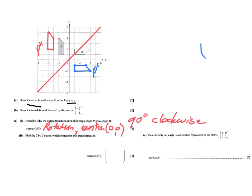It was quite easy to find out it is a rotation simply by crossing out the other possibilities: it's not a translation, it's not a reflection, it's not an enlargement — so what is left is the rotation. Fantastic — three points, excellent.